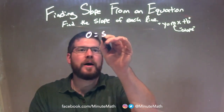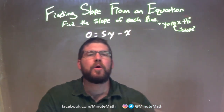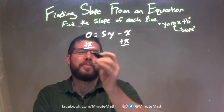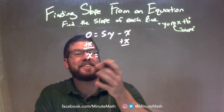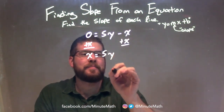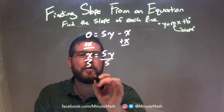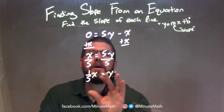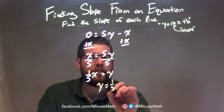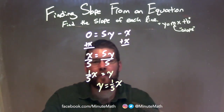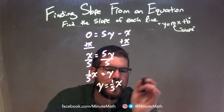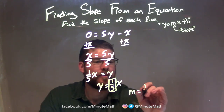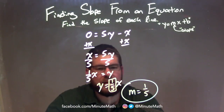0 equals 5y minus x. To find the slope, I get y by itself. Let's add x to both sides: x equals 5y. To get y by itself, I divide both sides by 5: x divided by 5 is 1 fifth x, equal to y. Let's rearrange and have y come first: y equals 1 fifth x. That is in slope-intercept form, y equals mx plus b, with b being 0. Our m value is 1 fifth — the coefficient for x. So m equals positive 1 fifth. That is our final answer.